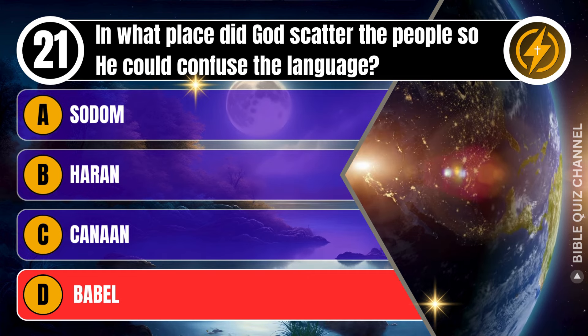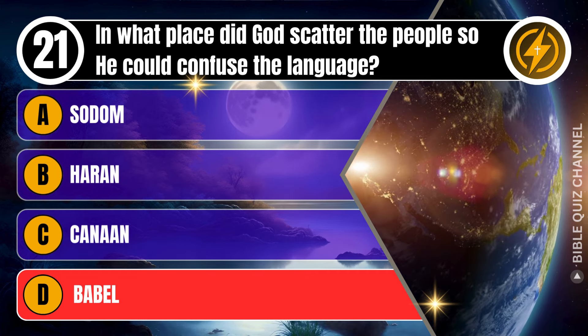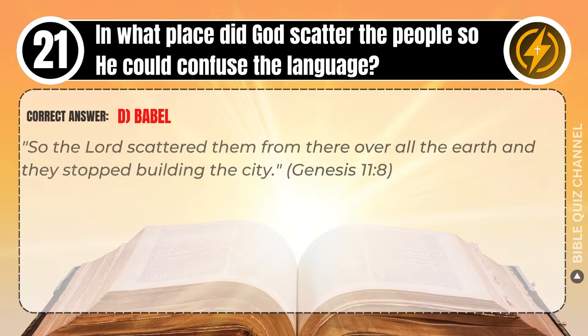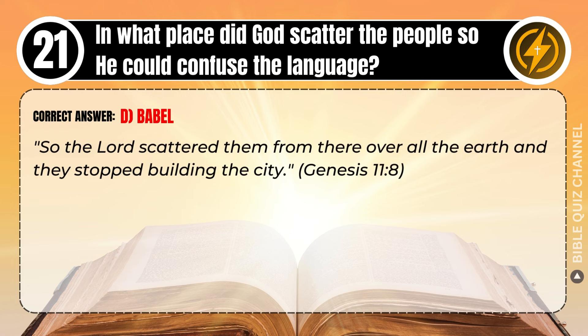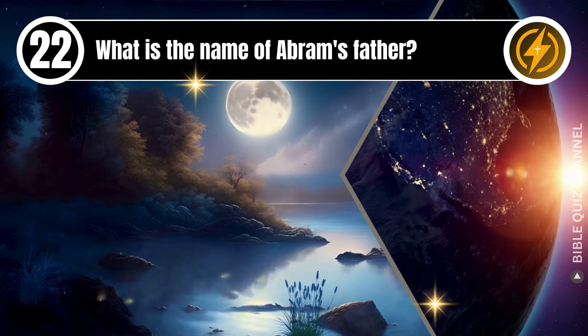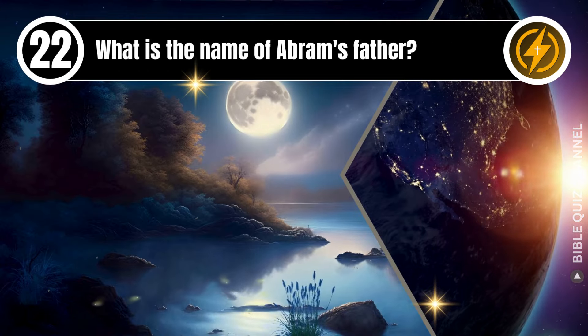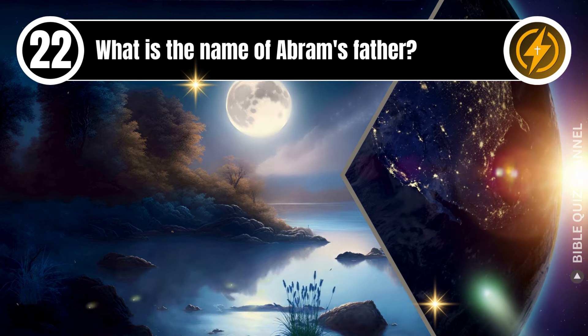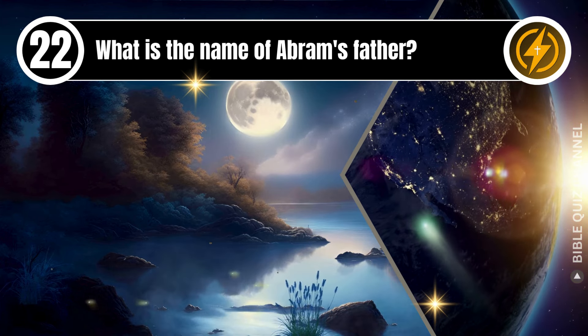Correct answer: D. Babel. Explaining the Bible — So the Lord scattered them from there over all the earth, and they stopped building the city. Genesis, chapter 11, verse 8.